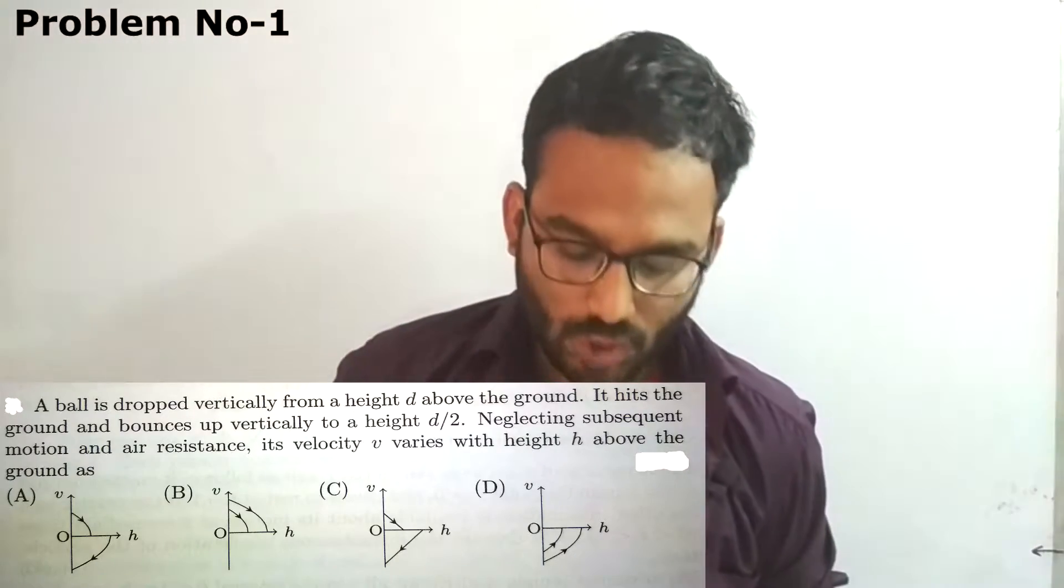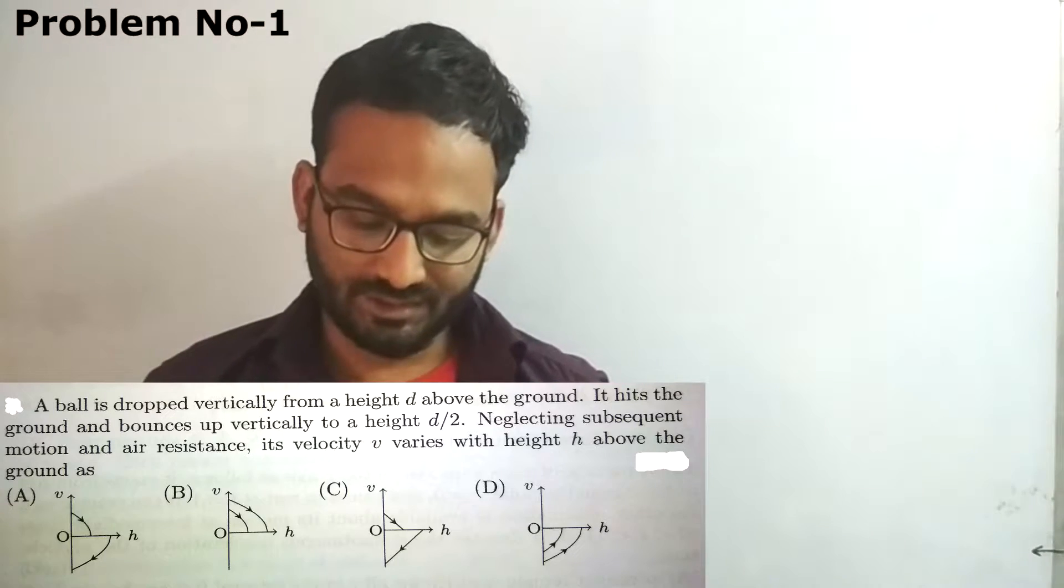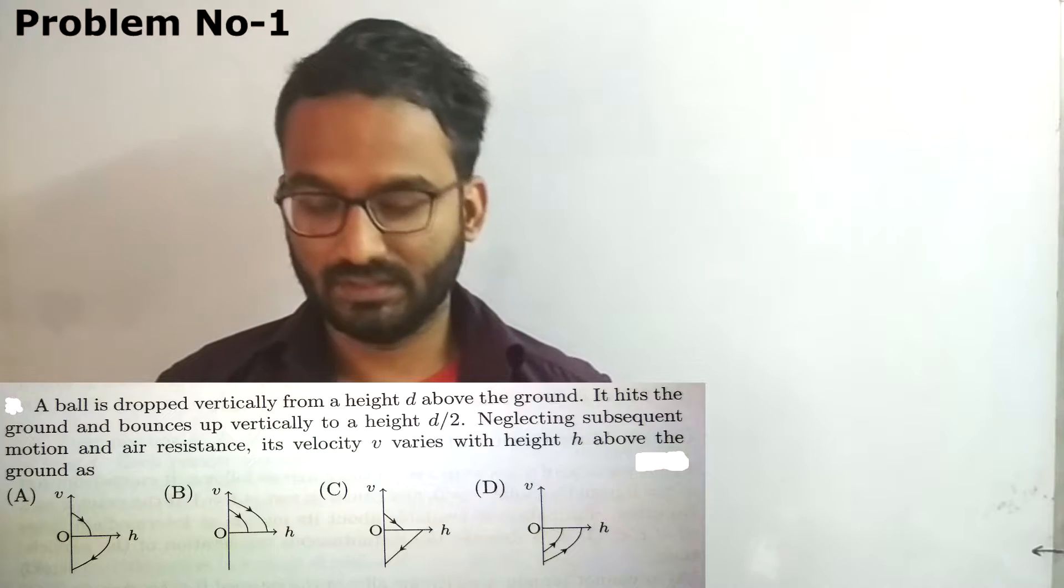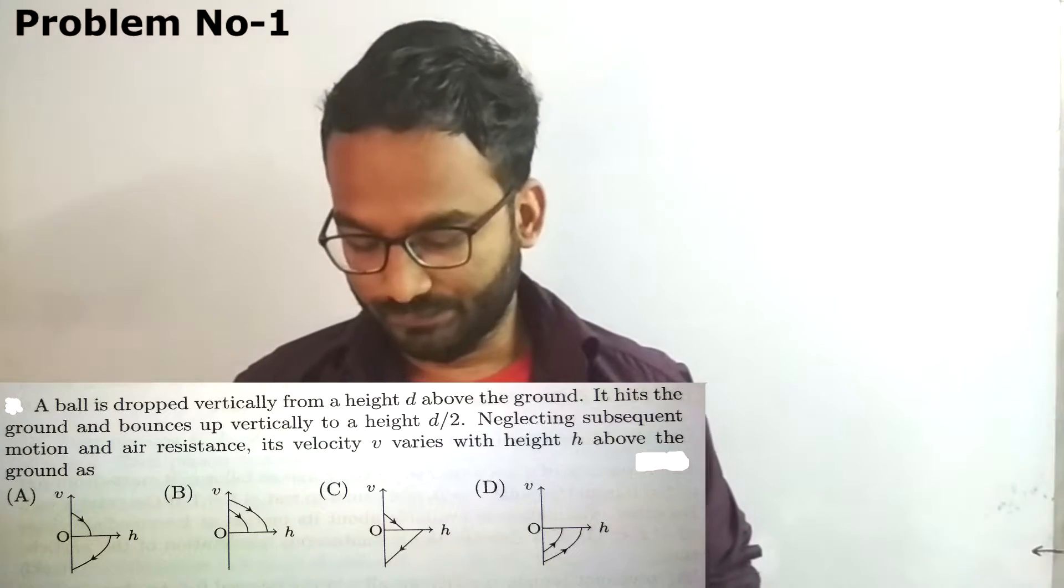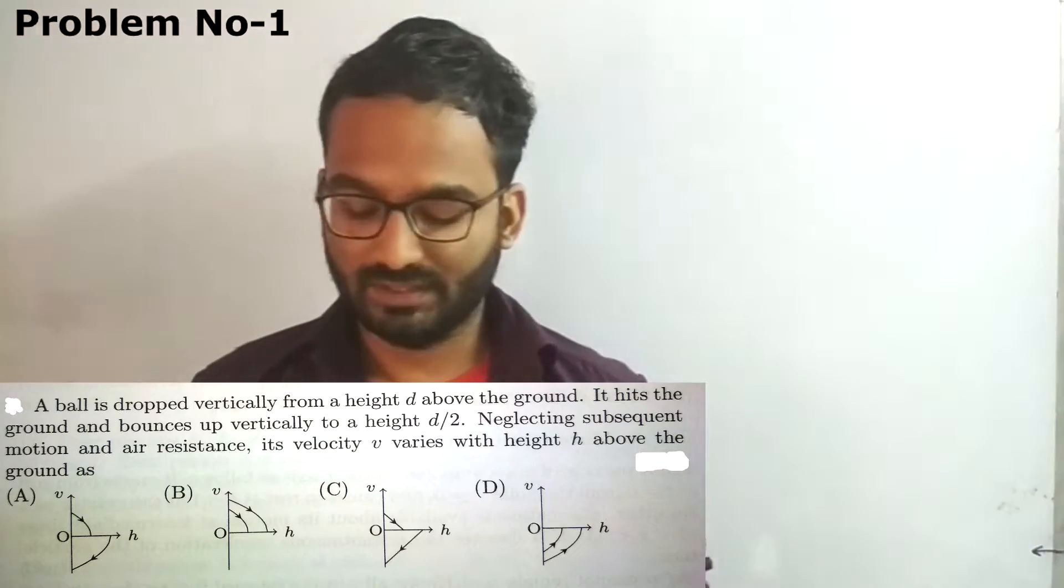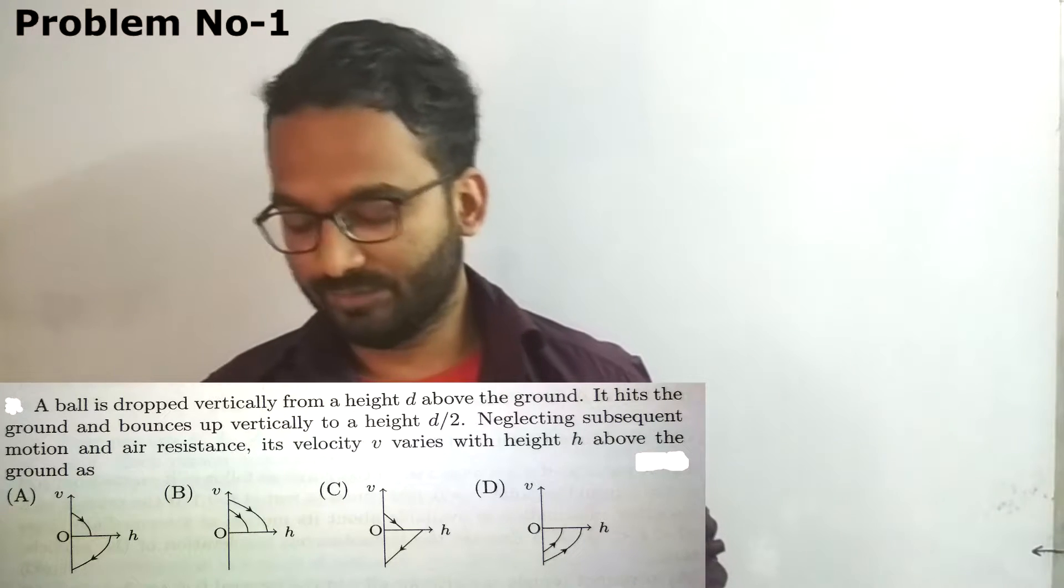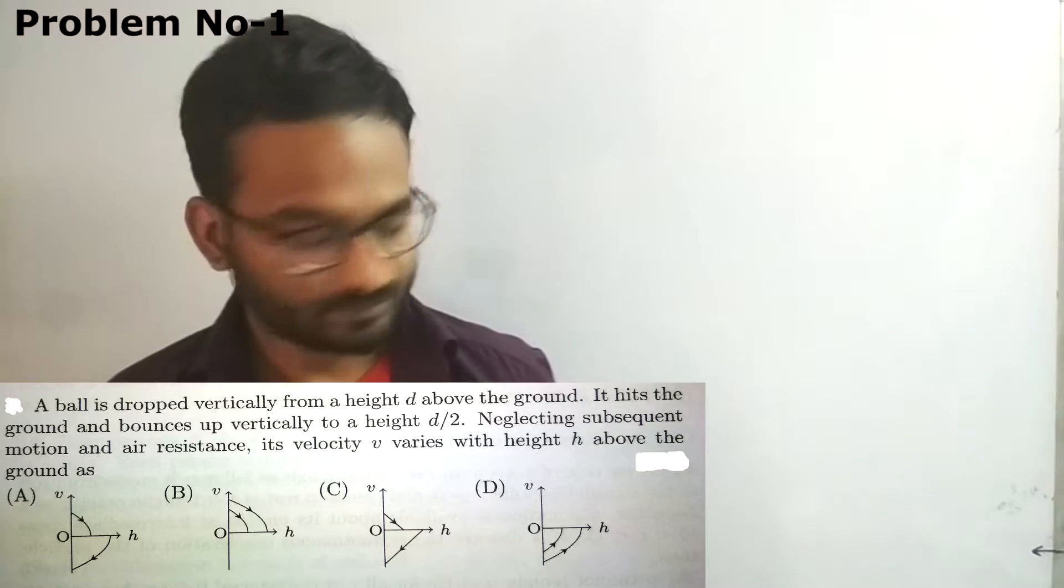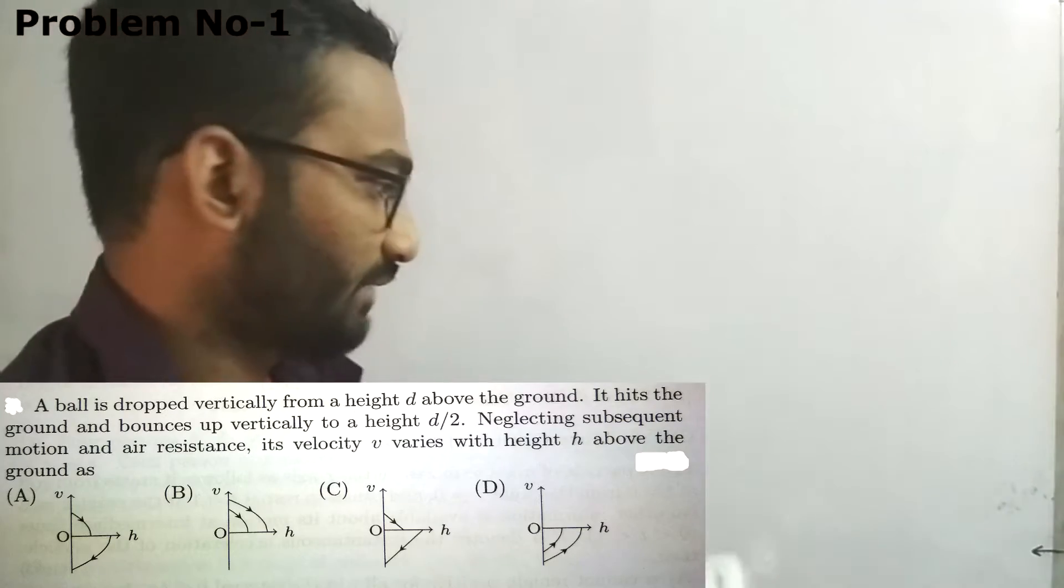This is the first problem. A ball is dropped vertically from a height d above the ground. It hits the ground and bounces up vertically to a height d/2. Neglecting subsequent motion and air resistance, its velocity v varies with height h above the ground. You are given graph options.